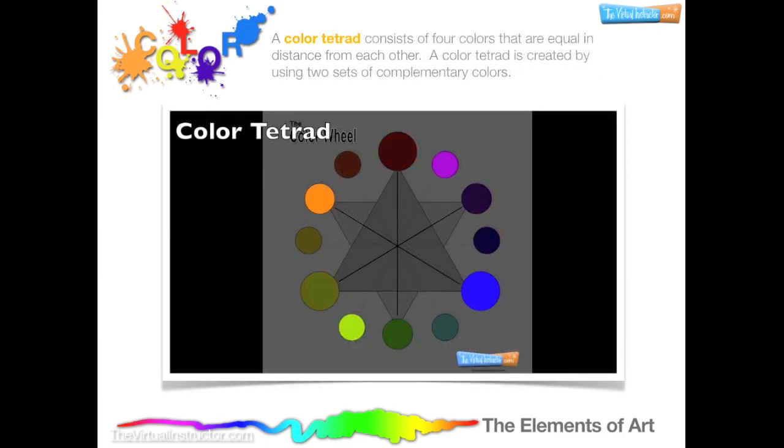A color tetrad consists of four colors that are equal in distance from each other. A color tetrad is created by using two sets of complementary colors. For example, blue and orange and yellow-green and red-purple.